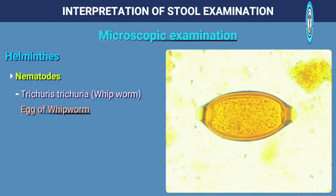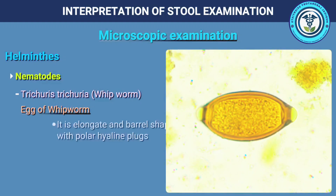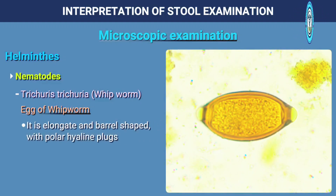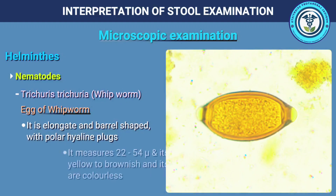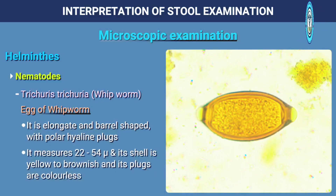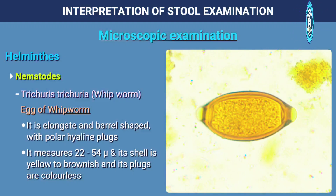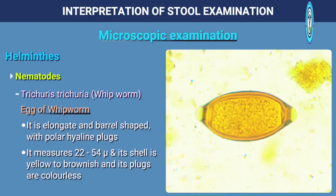Trichuris trichiura, or whipworm: the egg is elongate and barrel-shaped with polar hyaline plugs. It measures 22 to 54 microns and its shell is yellow to brownish while the plugs are colourless.